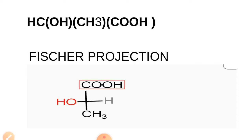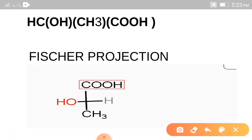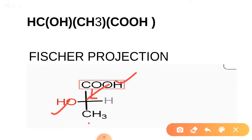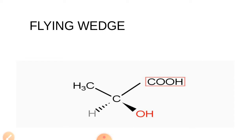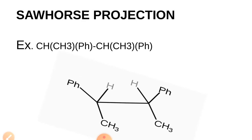Since carbon has 4 bonds, 4 types of atoms can be attached to carbon. Here, this is the carbon with which 4 groups are attached: CO2H, OH, CH3, and hydrogen. This is the representation of Fischer projection, and this is the representation in flying wedge projection. And this is the sawhorse projection.